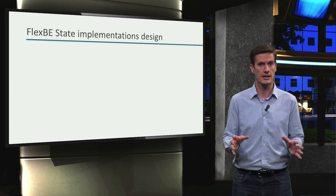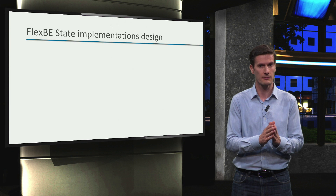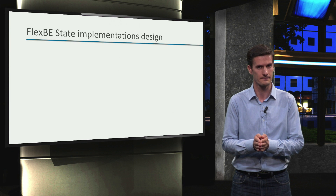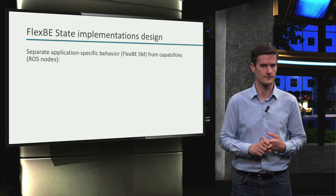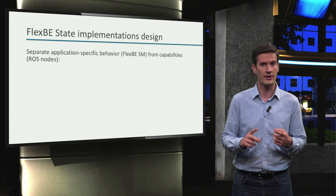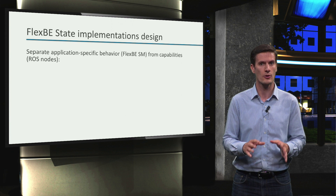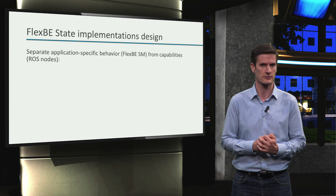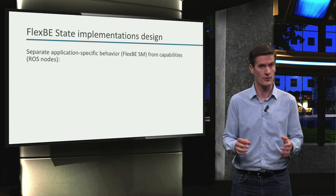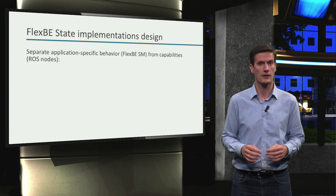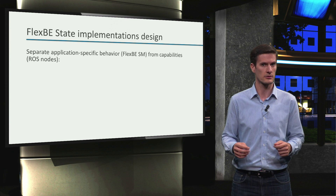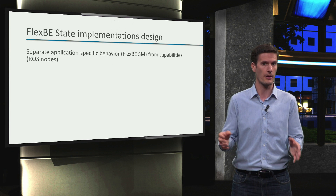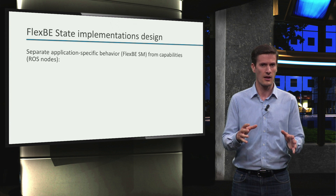We can say that FlexBE follows a design principle that is very important in ROS: separating your application-specific behavior from the robot capabilities. This principle guarantees that you can use the same ROS nodes for different applications. For example, as you have seen, the move_base and move_group nodes are used in many different robot applications — for mobile manipulators and for mobile robots. What does this principle mean for FlexBE states?